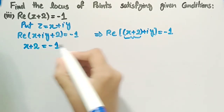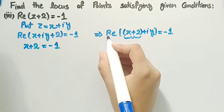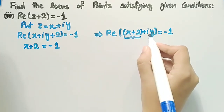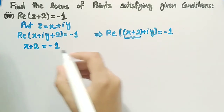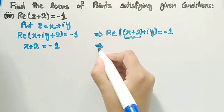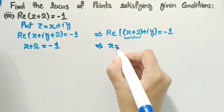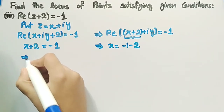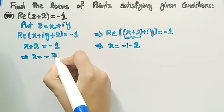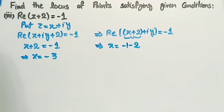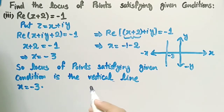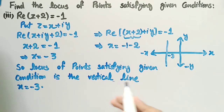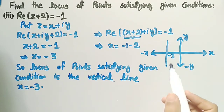The real part of this complex number is x plus 2, so we can write x plus 2 equal to minus 1, because we take the real part of the complex number which is x plus 2. This implies x is equal to minus 1 minus 2, so x is equal to minus 3. The locus of points satisfying the given condition is the vertical line x equals minus 3.